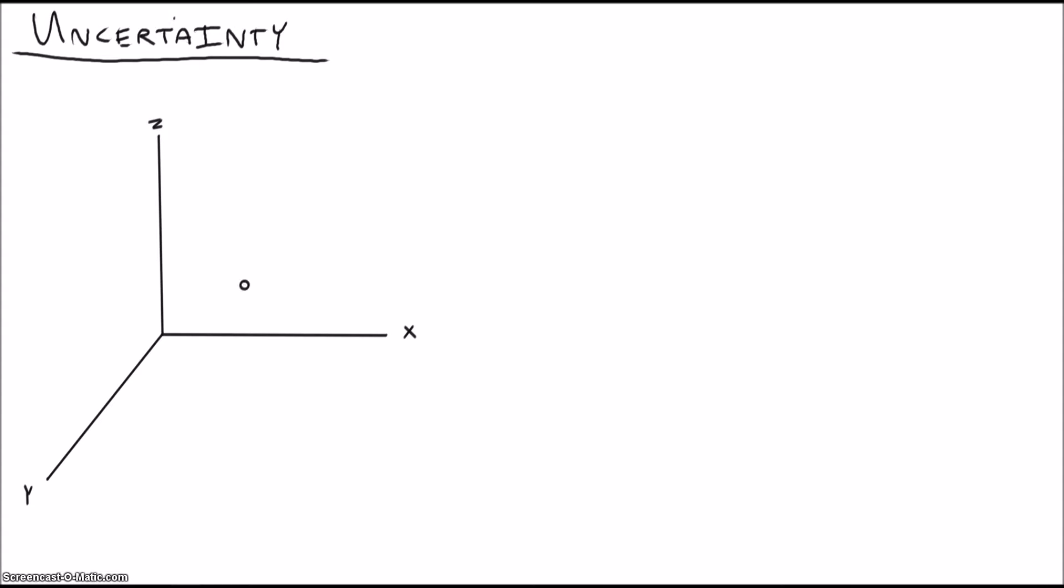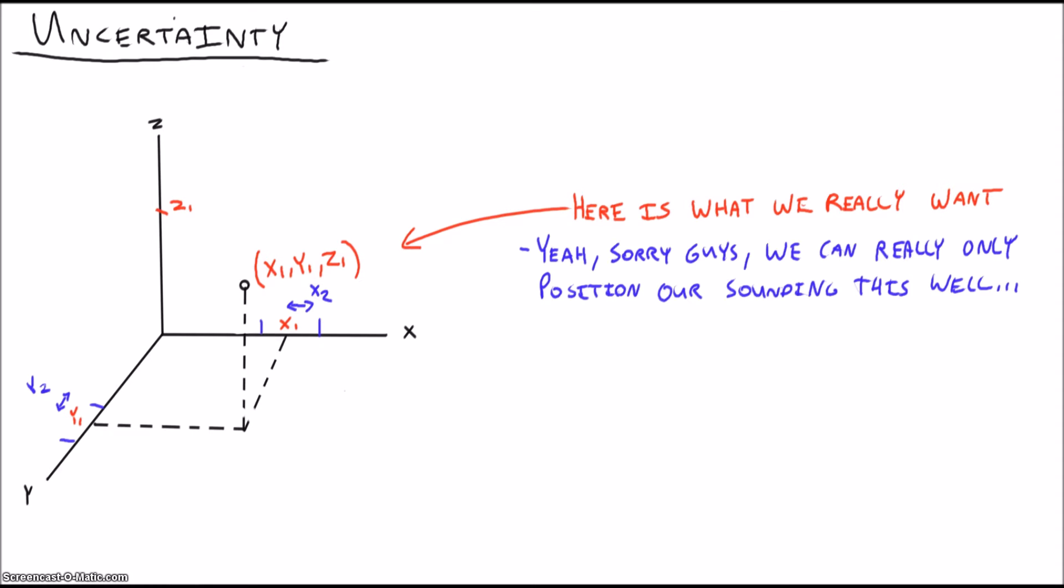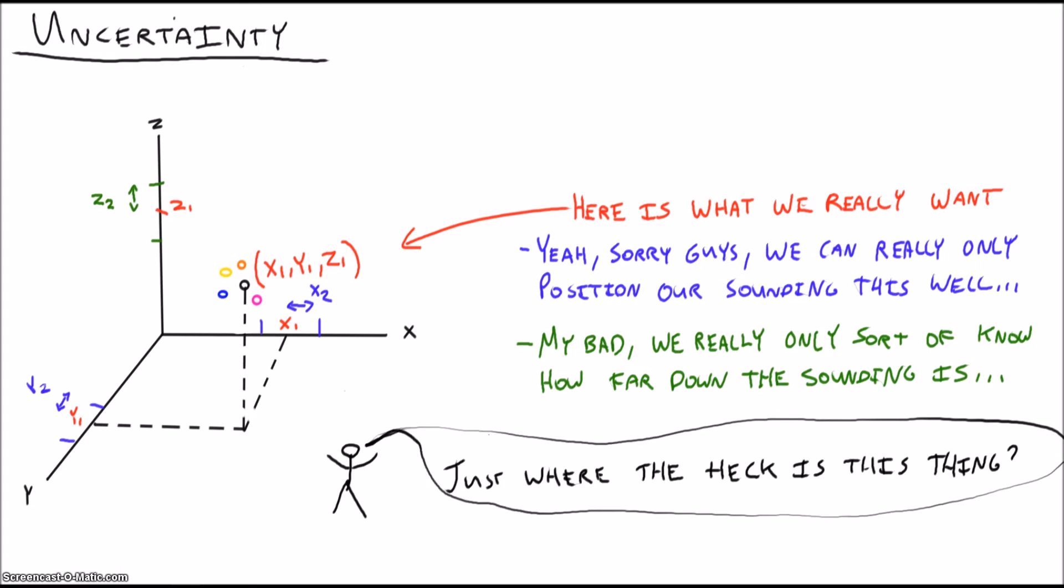If every dot or sounding we collect has an x, y, and z position, let's record the x, y, and z uncertainties for our horizontal and vertical positioning of that sounding. This gets us away from the 'here is your depth at this point' approach towards the 'here is what we think the depth is and here is how certain we are' method.